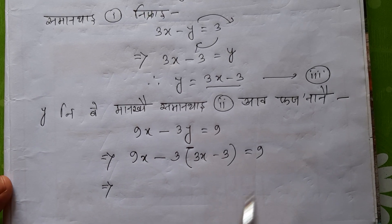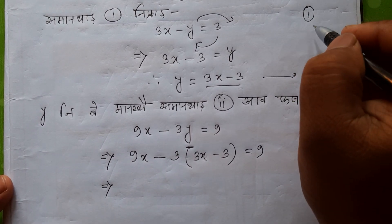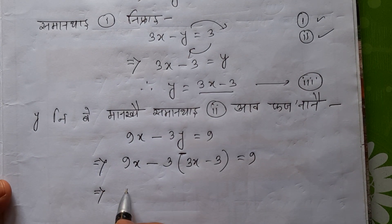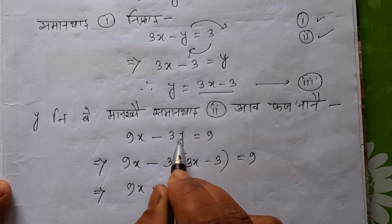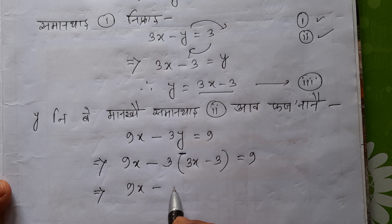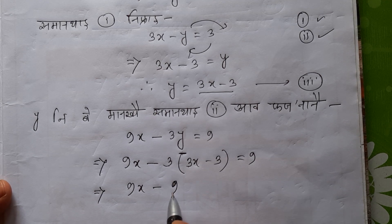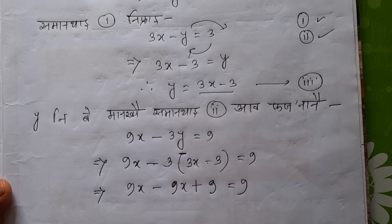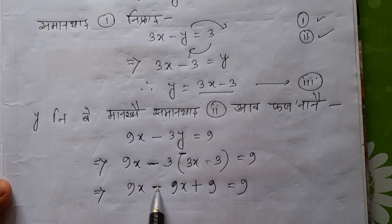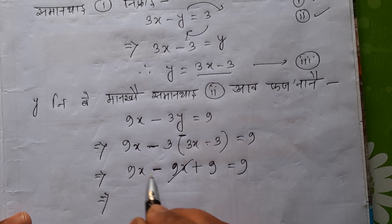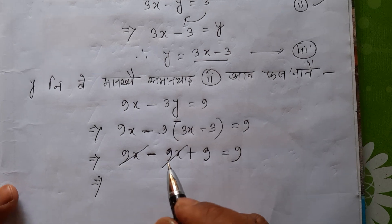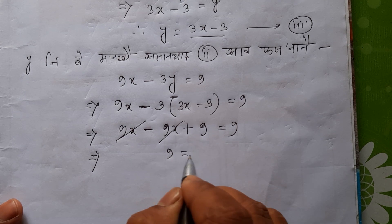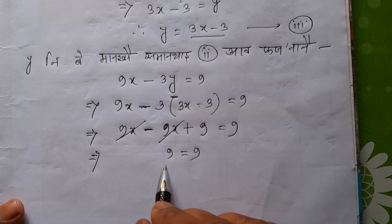We have 9x minus 3 is equal to 9. So we have 9x minus minus plus 9. The minus minus gives plus, so it will be 0, and it will be equal to 9. So 9 equals 9.